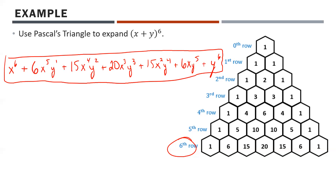Pascal's Triangle is an awesome tool for determining the coefficients on binomial expansions. But the unfortunate drawback is what if you had something even bigger? You can continue building rows — the seventh row would be 1, 7, 21, 35, 35, 21, 7, 1 — but it gets bigger and bigger and eventually becomes unfeasible. That's where permutations and combinations come in.